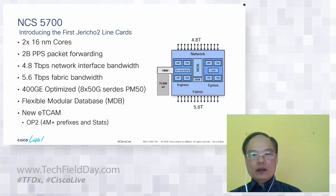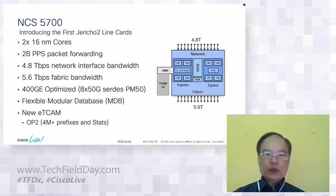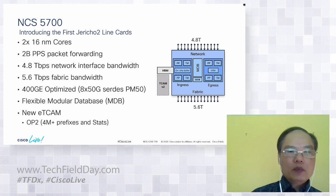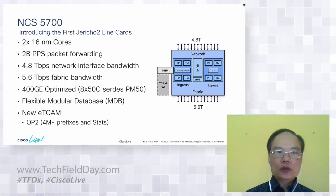Optionally, we could also support external TCAM. The version supported by Jericho 2 is an enhancement called OP2. The OP2 TCAM not only can support higher route scale, it could also store counters so that it can do additional statistics.